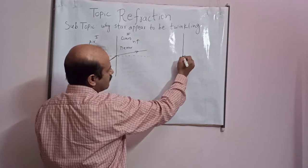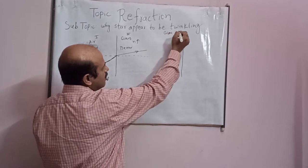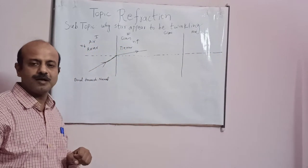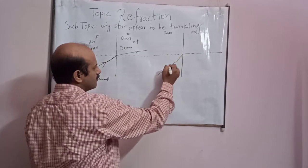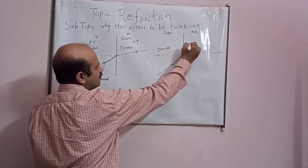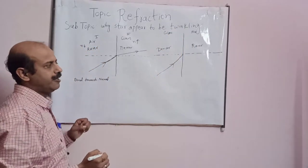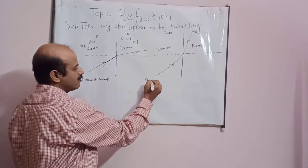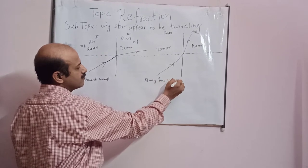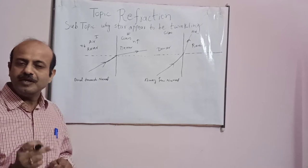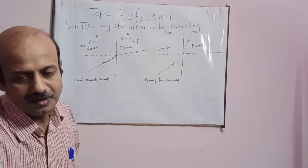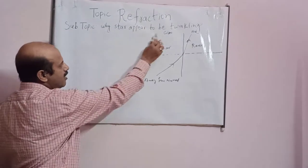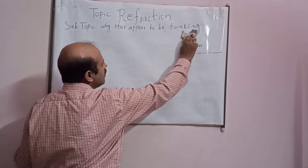Now I am taking another interface. Suppose the first medium is glass and the second medium is air. Now light is travelling from glass to air — this is denser medium, this is rarer medium. It will bend away from the normal. Why is light bending? Because the mediums have different refractive indices. So remember these two phenomena: when light travels from rarer to denser, it bends towards the normal; when light travels from denser to rarer medium, it bends away from the normal.